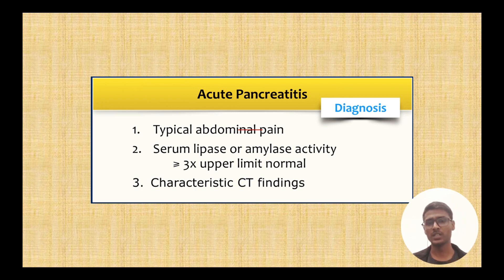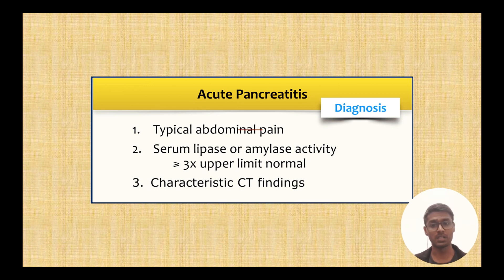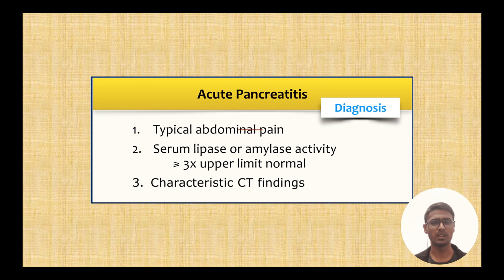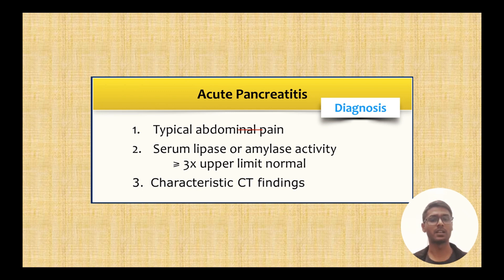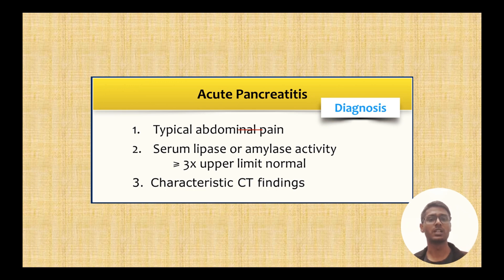Lipase specificity is also much higher than amylase. Amylase is non-specific — it can come from the salivary glands. So always check lipase. If it is more than three times the upper limit of normal, that is positive. The third criterion is characteristic imaging finding — not only CT, you can use ultrasound or even X-ray. You need two of three criteria for the diagnosis.